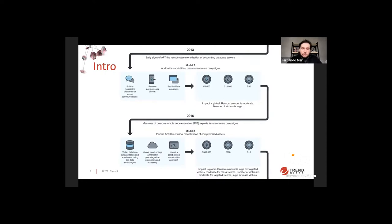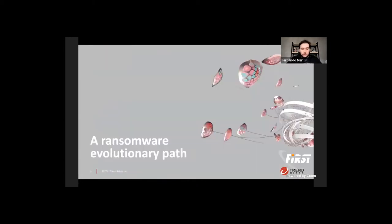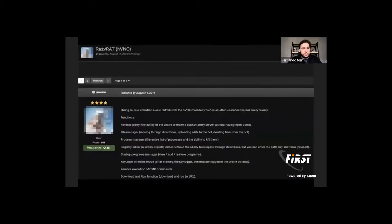We've seen ransomware attacks using exploits, remote code execution exploits, and lots of commonalities with more targeted attacks. That also includes different models of affiliate programs. This shift is important into what I would call the ransomware market. They have an interesting evolutionary path for this specific group.